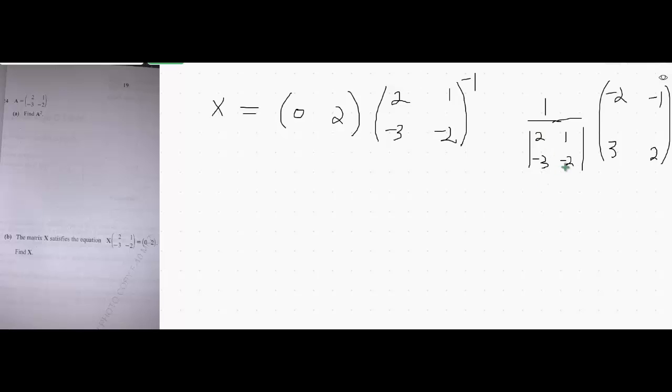Now to find the determinant of this, multiply these two values, minus 4, and then minus, then multiply these ones, minus 3. So it is minus 4 plus 3 which is minus 1.